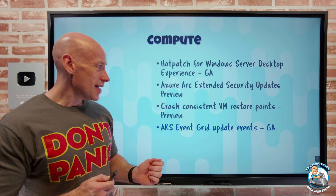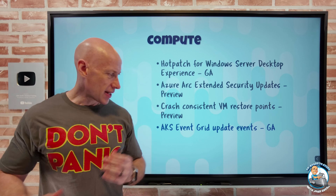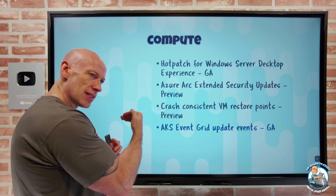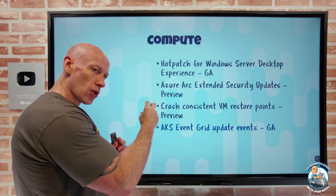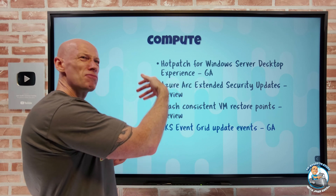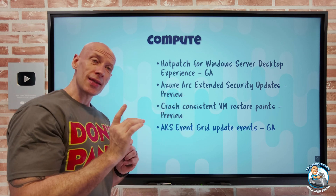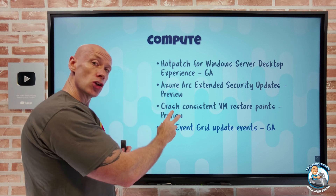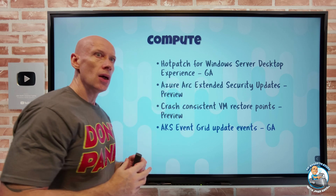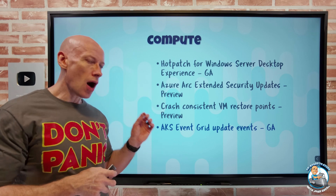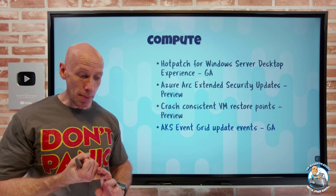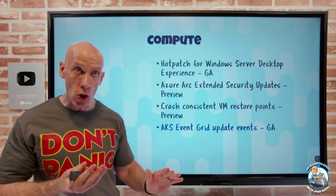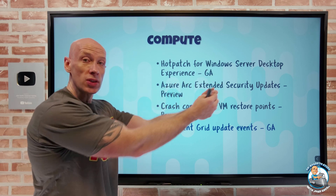Azure Kubernetes Service now has Event Grid support for its update events. Event Grid sits in the middle as an engine — it sees events from sources and then calls event handlers like functions, logic apps, or webhooks, eliminating the need for handlers to continuously poll for updates. AKS update events — such as an upgrade completing, being cancelled, failing, or a cluster going out of support — can now be sources for Event Grid, enabling automated actions.